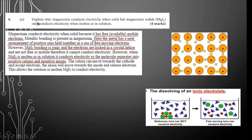So the first one, explain why magnesium conducts electricity when solid, but magnesium iodide only conducts electricity when molten or in solution. This question asks for quite a few things: why it conducts electricity when solid, why magnesium iodide only conducts when molten, and of course you also have to explain why magnesium iodide would not conduct electricity when it is in a solid state.